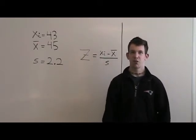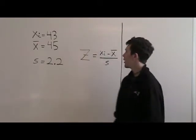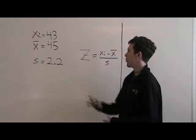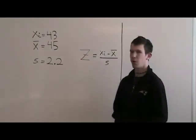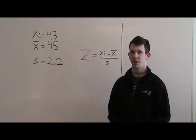This is how you find the z-score using the z-score formula. In this problem, xi is 43, the x-bar is 45, and the standard deviation is 2.2.